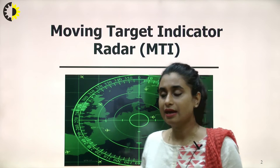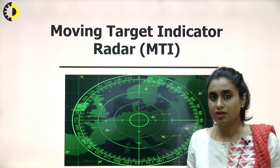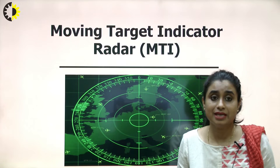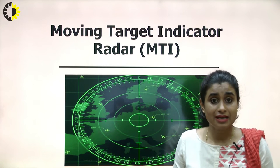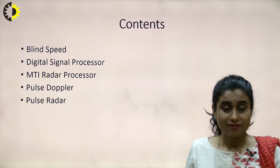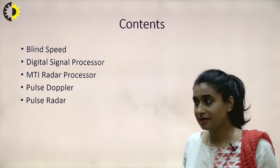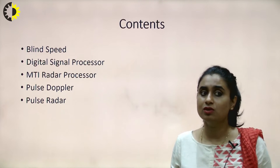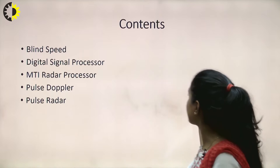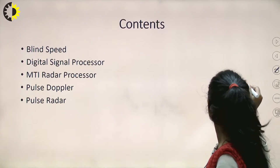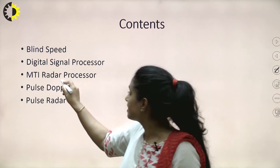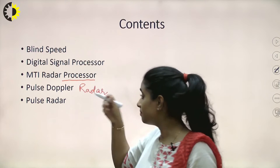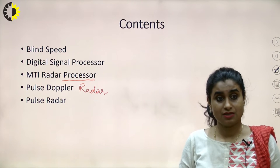Although MTI radar works using the phenomena of Doppler frequency shift, it has its own limitations. One of the prime limitations in case of moving target indicator is blind speed. We'll start from blind speed again — I'll give a brief review. Then we talk about digital signal processing, how MTI radar actually works, then in detail about the MTI radar processor, then pulsed Doppler radar, and finally we compare MTI with pulsed Doppler radar.